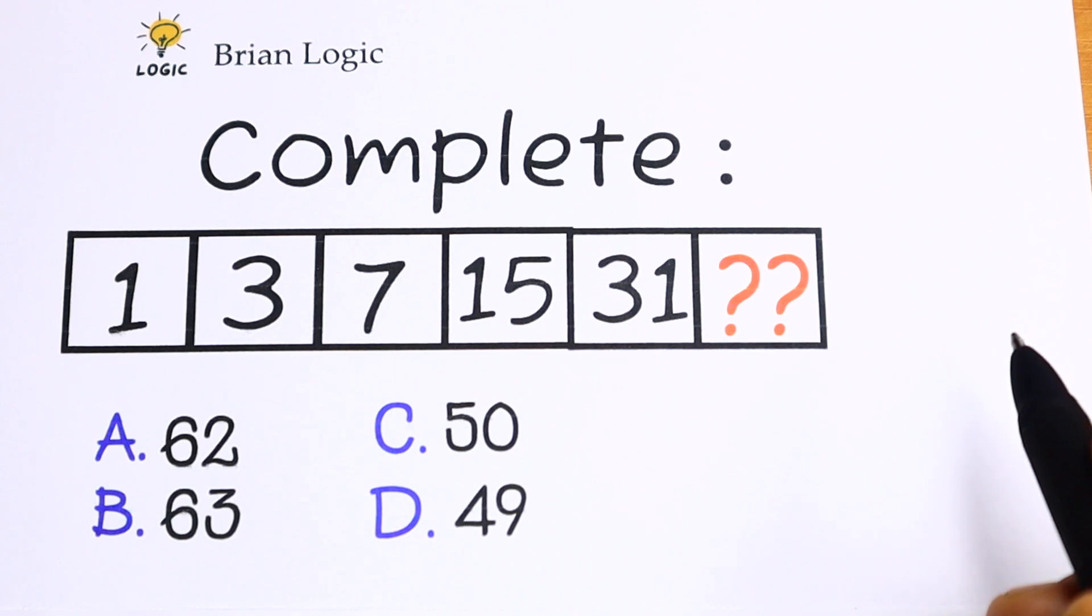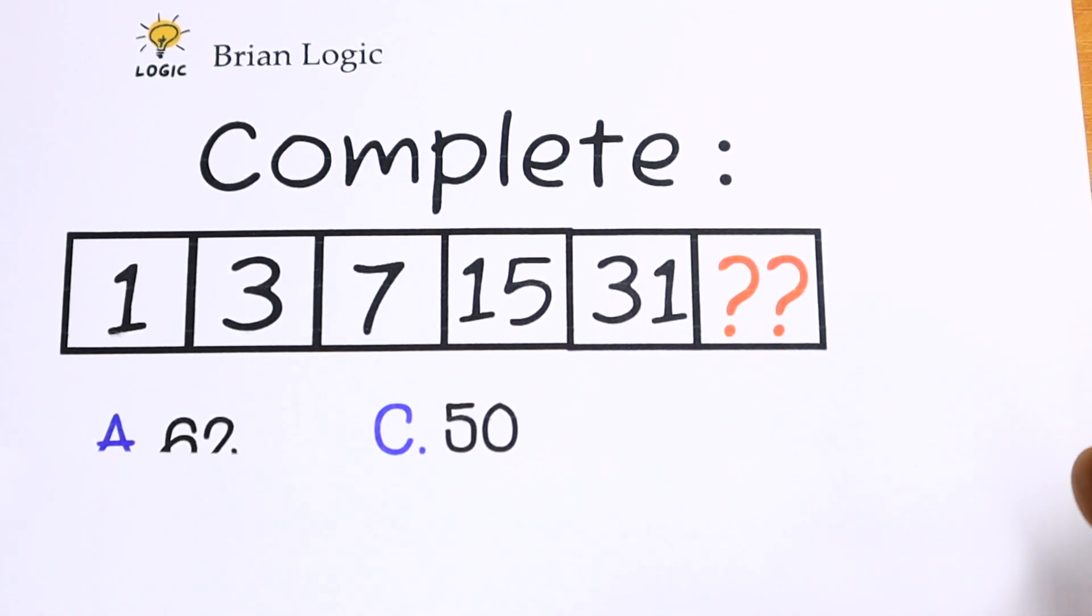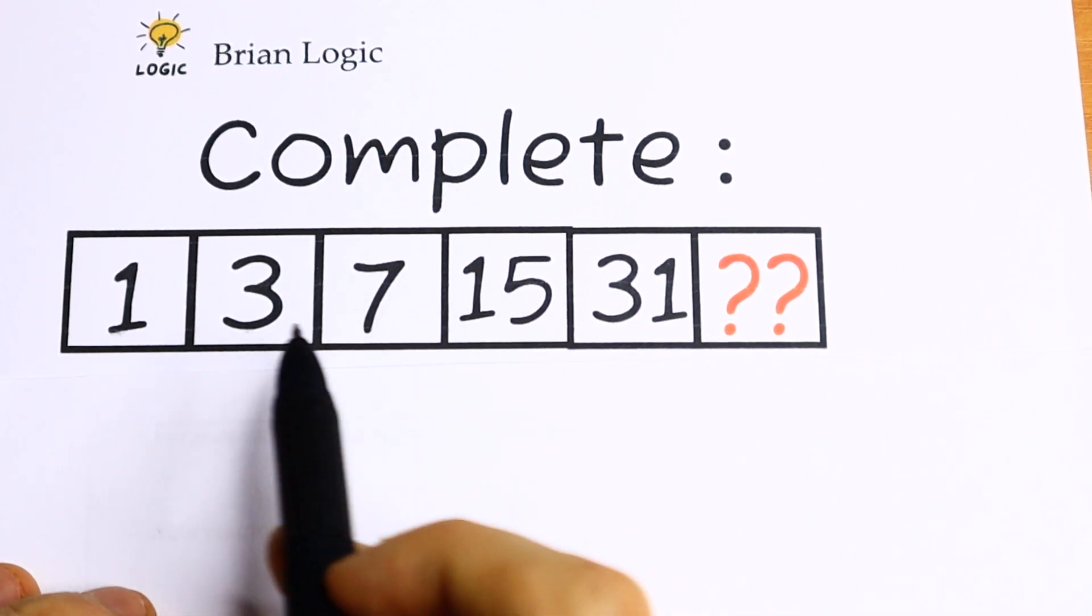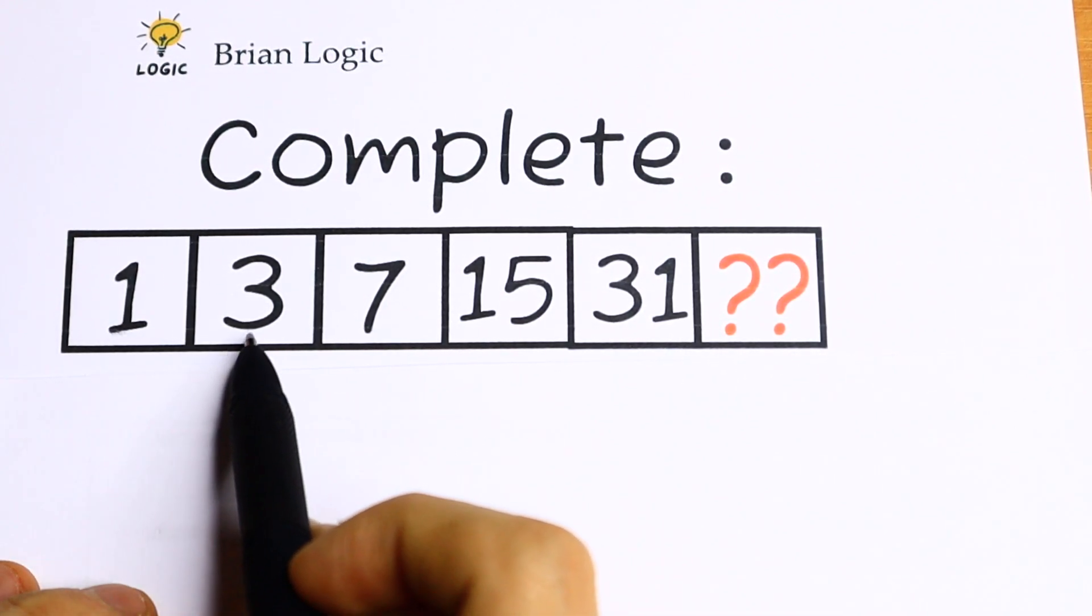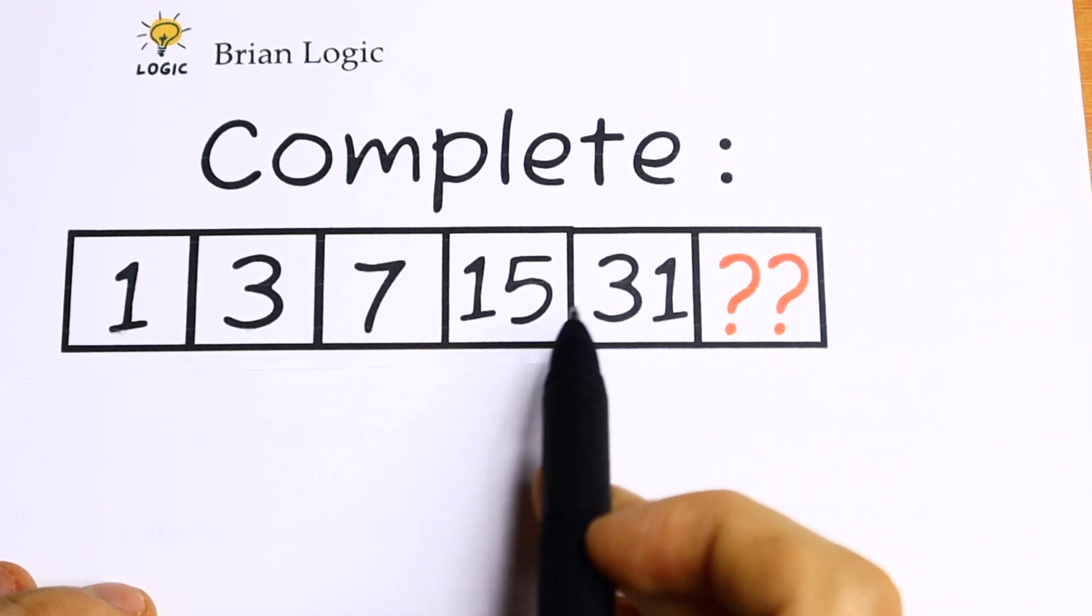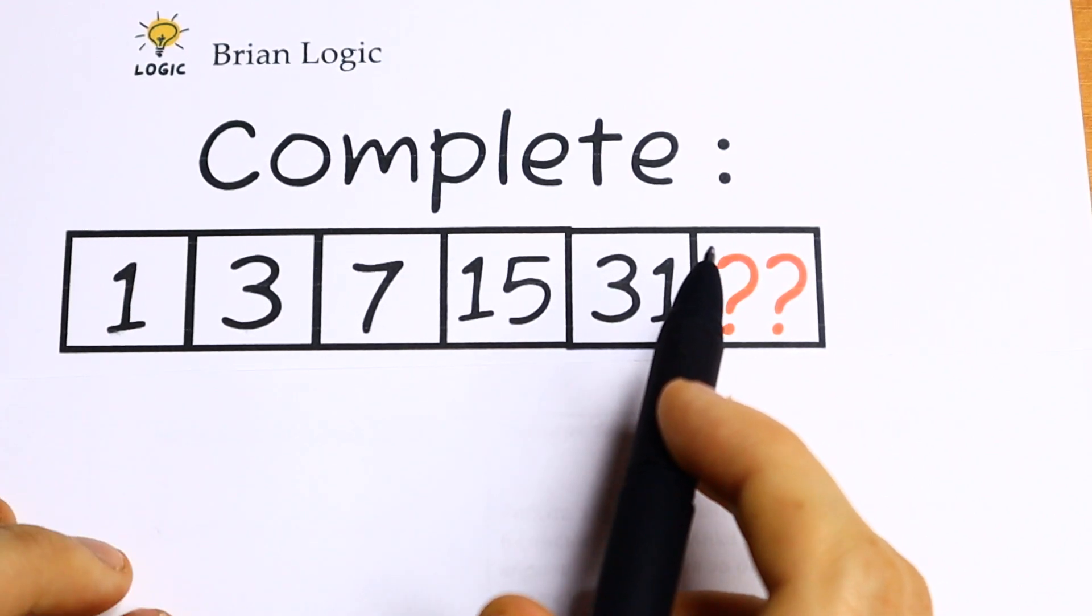We have these numbers and we need to find the pattern between all of them. What I suggest? Take a look. If we're talking about addition, there is no pattern. If we add 1 plus 3 we have 4, 3 plus 7 we have 10, 7 plus 15 we have 22. There is no common pattern with addition.